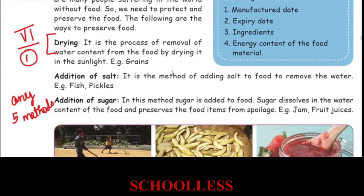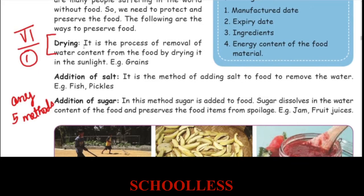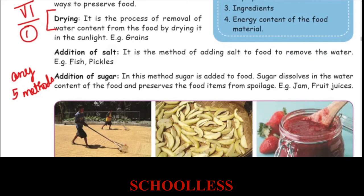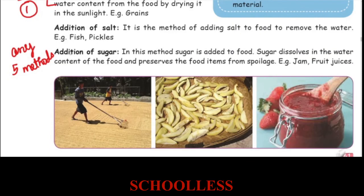Drying is a process of removal of water content from the food by drying it in the sunlight — mostly used for grains. Addition of sugar, such as adding sugar to fruits, is used to make jam.